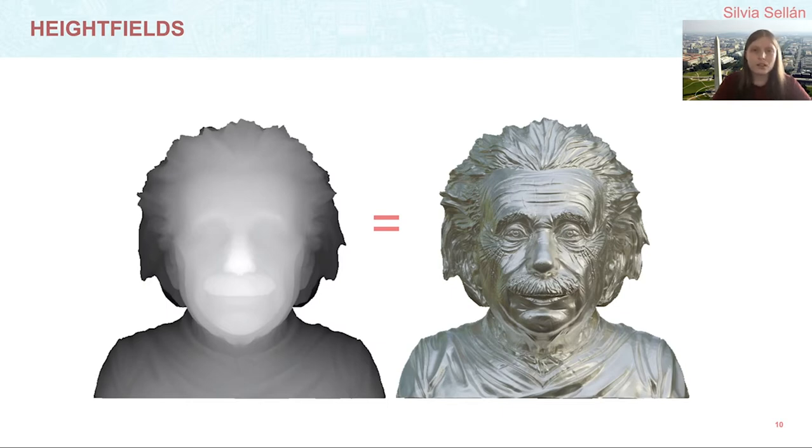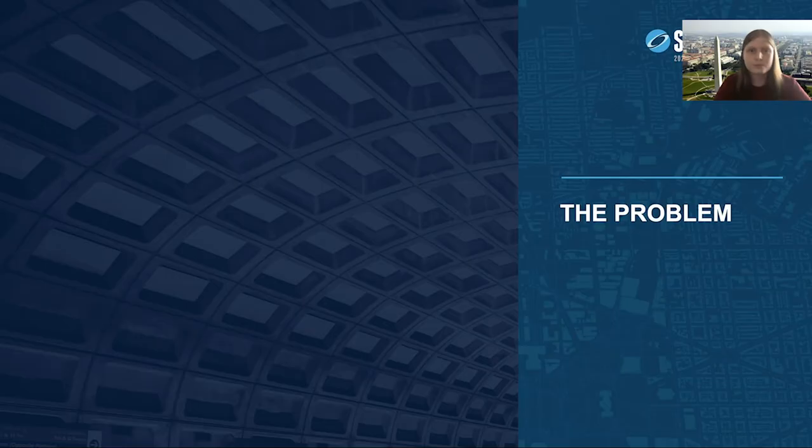All our images from this talk will be heightfields, even if they have arbitrary boundaries or if they are rendered for clarity as surfaces. Since we'll often omit the grayscale image on the left, from now on we will only be showing heightfields. Now that we've introduced these concepts, let's take a look at the problem we want to solve.